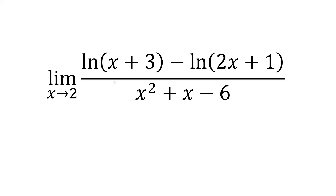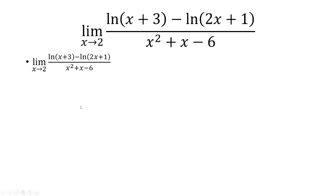We want to find the limit as x approaches 2 of this rational function without using L'Hopital's rule. So let's factor out the denominator first. x squared plus x minus 6 factors into x plus 3 times x minus 2.